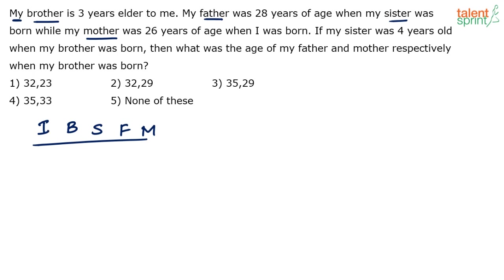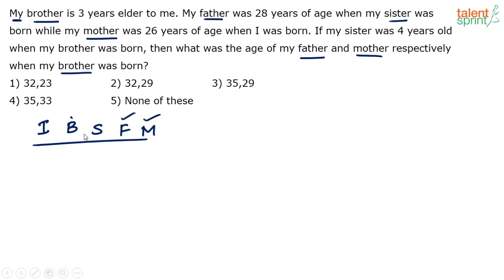Now read the data — there are statements related to their ages. These are nothing but equations. You have to convert these into mathematical equations and find out what was the age of the father and mother respectively when the brother was born — that is, when the brother was zero years old.